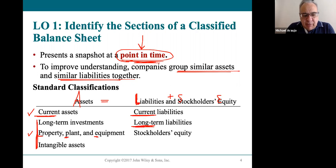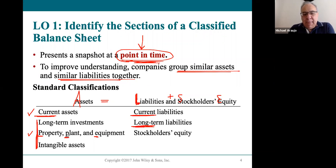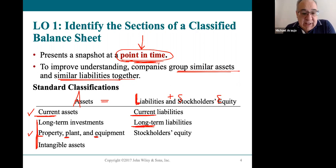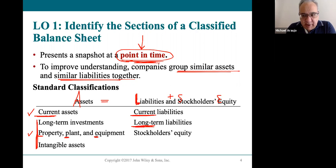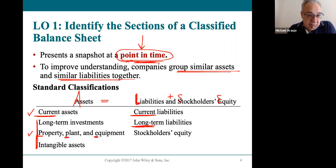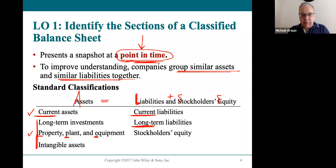Property is an older term for land, and land is usually listed first. Plant is an older term for building or factories. Equipment is a sort of catch-all — for a pizza store, equipment would be the refrigerator, ovens, furniture and fixtures, and even a delivery truck. Equipment is a larger catch-all category, and that's how you should be seeing it.